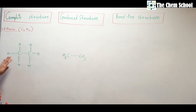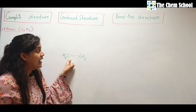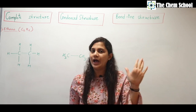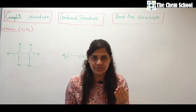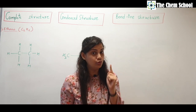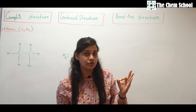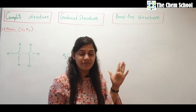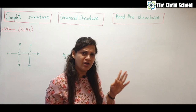The major difference is: in the complete structure we show each hydrogen with individual bonds, but in the condensed structure we write all the hydrogens together attached to that particular carbon. In the bond line structure it is even simpler — we do not write down carbon or hydrogen. Remember: if hydrogen is attached to hetero atoms (atoms apart from carbon, like oxygen or nitrogen), we will write down those hydrogens.